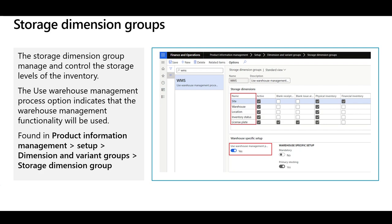The first is the Storage Dimension Groups, which manage and control the storage levels of the inventory. In the normal inventory flow, you can define items with Storage Dimension Levels like Site and Warehouse, or Site, Warehouse, and Location. But for items used in the Advanced Warehouse Management Process, you should ensure the item is linked to a Storage Dimension Group with the Use Warehouse Management Process option enabled. When that option is enabled, all inventory levels — Site, Warehouse, Location, Inventory Status, and License Plate — will be enabled.